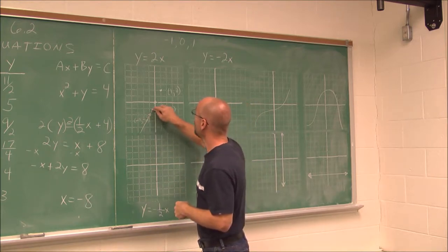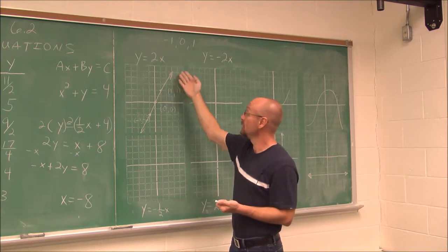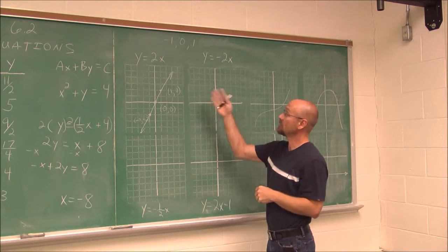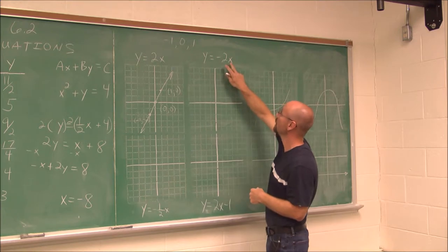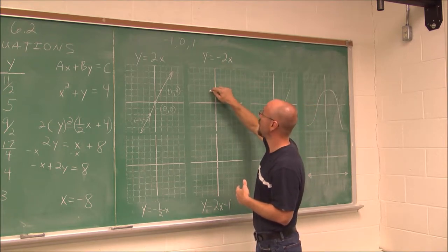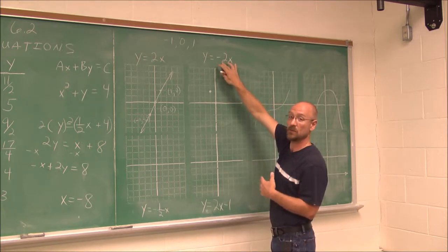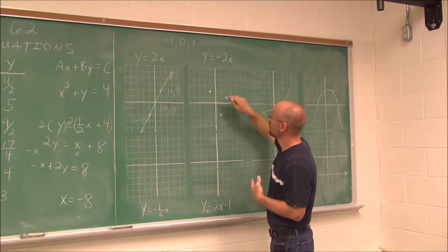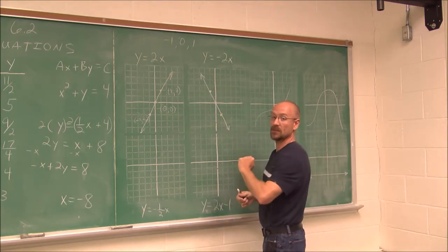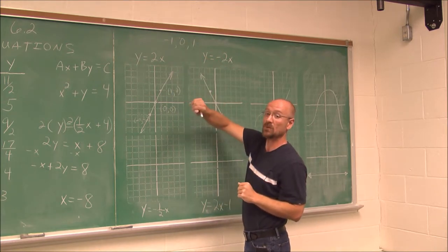At minimum we need two points in order to graph a line — connect two points and you draw a straight line. Now for y equals negative 2x, using the same x values: when x is negative 1, negative 1 times negative 2 is positive 2. When x is 0, we still get the origin. When x is 1, 1 times negative 2 is negative 2. One line is increasing from left to right and one is decreasing — we'll define that in the next section when we talk about slope.